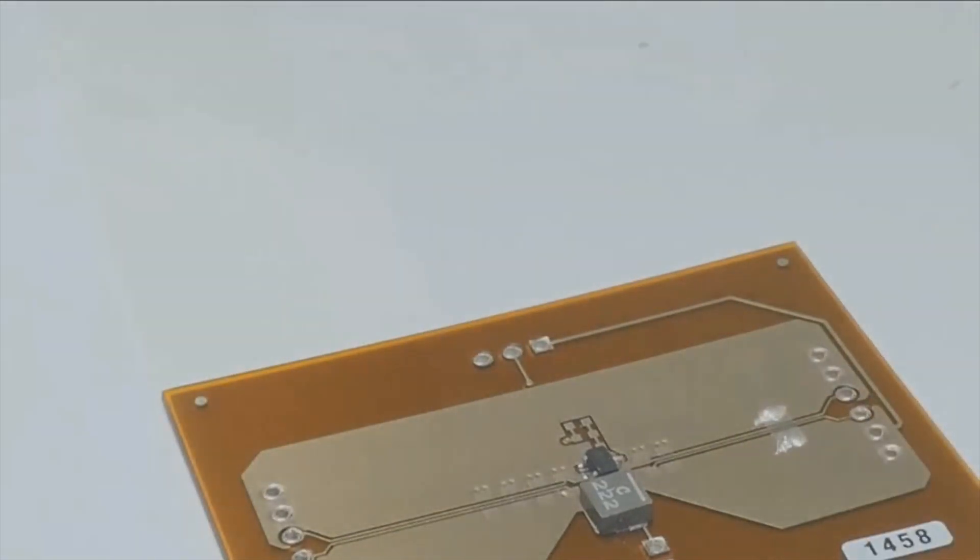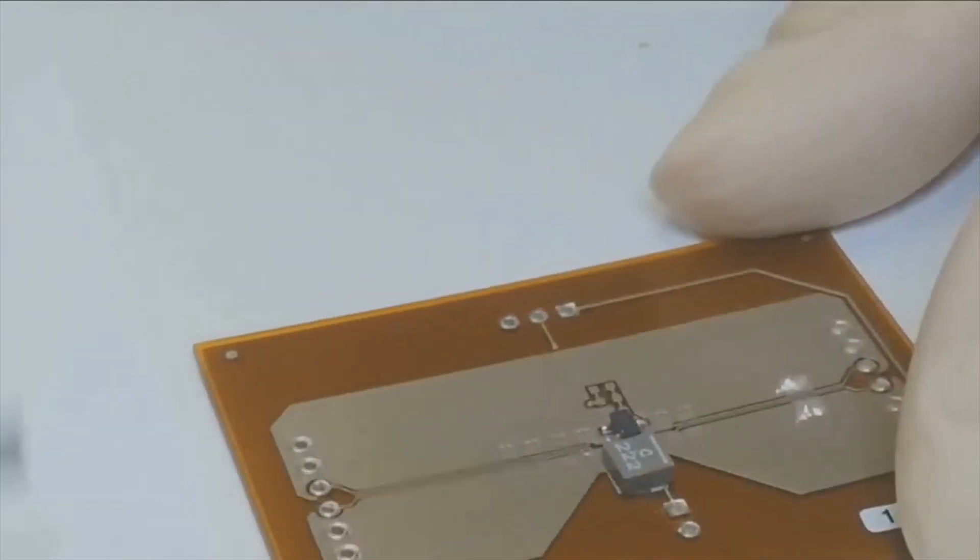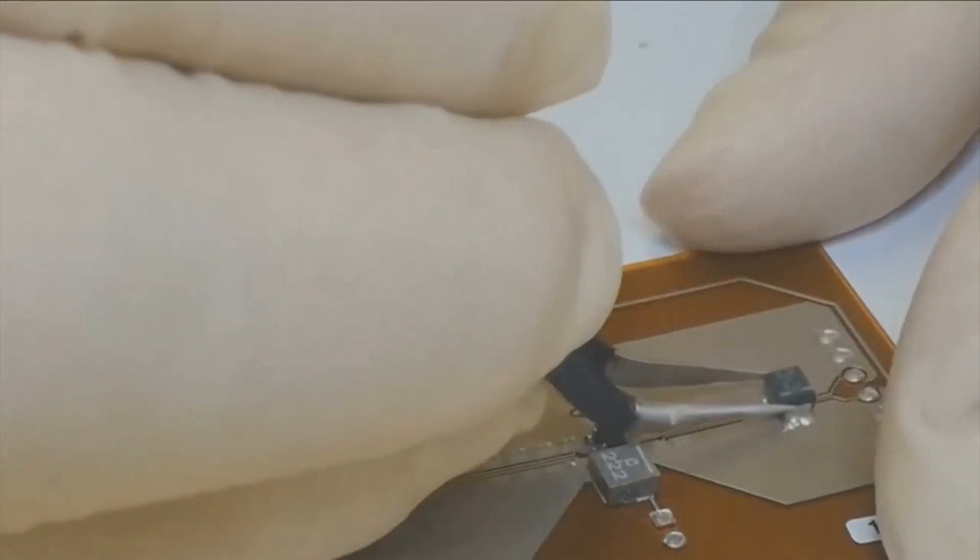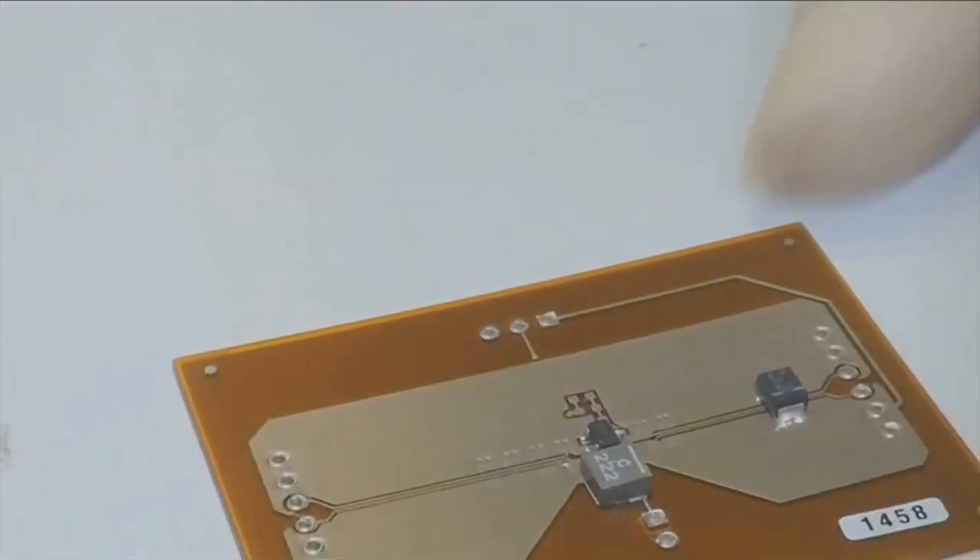Components should be installed by complexity, followed by proximity. Start with the smaller and more complex components at the center of the PCB, and work away from that component based on proximity.